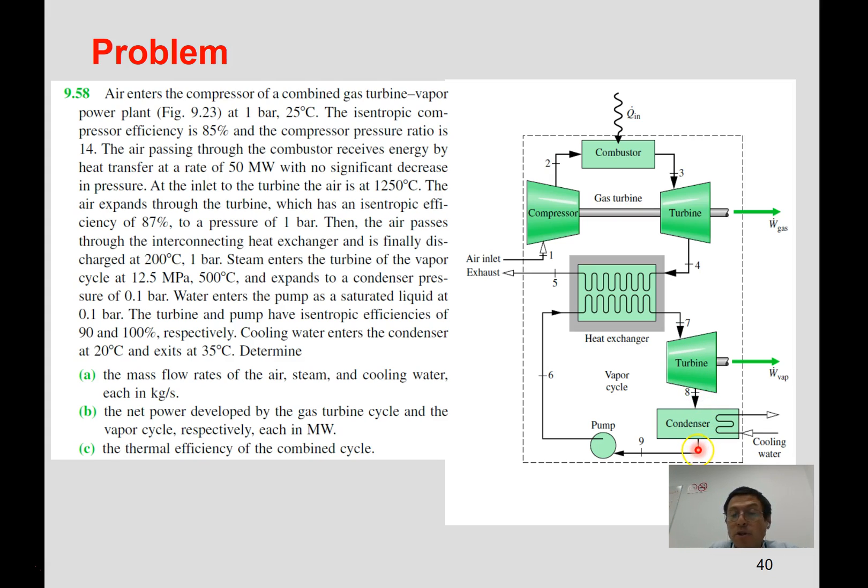It expands in a turbine which has an isentropic efficiency of 90 percent, and then it cools down in a condenser. The pressure of that condenser is one bar or 10 kilopascals, and then we have a pump in order to increase the pressure from 10 kilopascals to 12.5 megapascals.